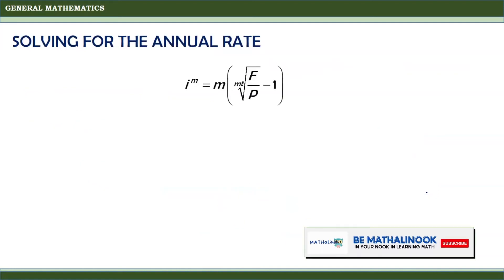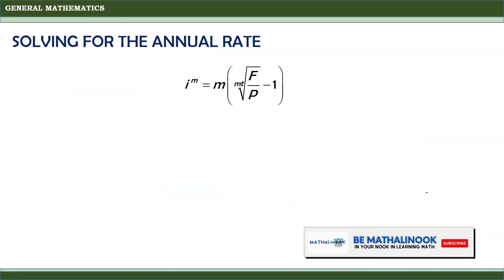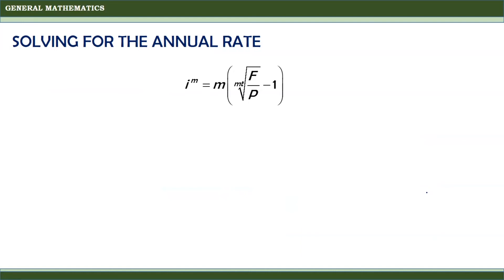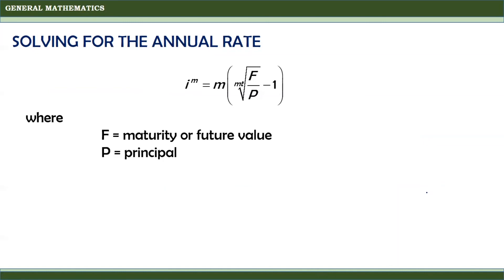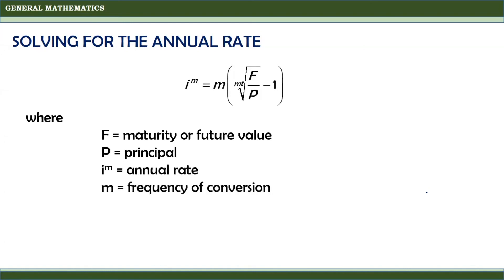Now let us solve for the annual rate. The annual rate I(M) is given by the formula I(M) equals M times the MT-th root of F divided by P, minus 1. Where F is the maturity or future value, P is the principal, I(M) is the annual rate, M is the frequency of conversion, and T is the term in years.